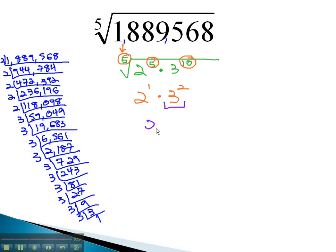Well, 3 squared is 9, and 2 times 9 is 18. This means that 18 to the 5th power is 1,889,568. We've calculated our root.